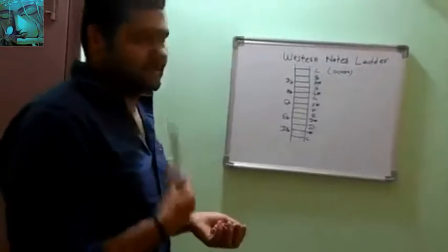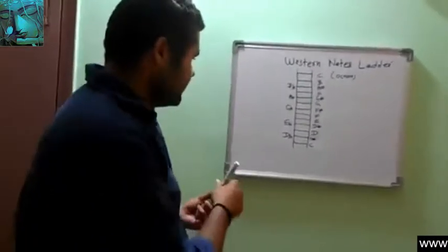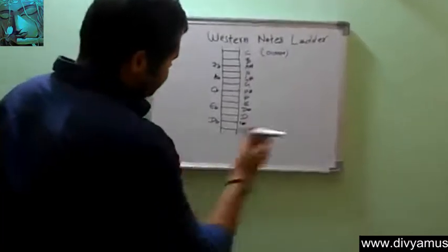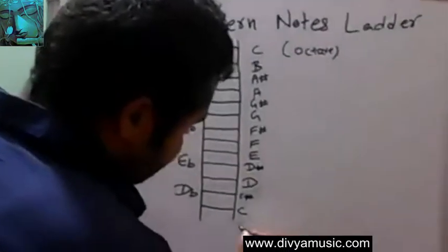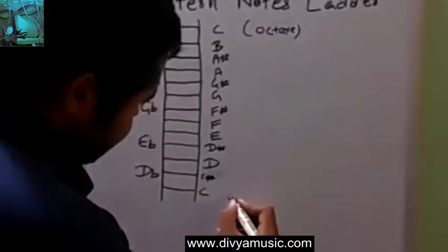Let's discuss the western notes ladder. You can see the first starting note on your keyboard is always C, and this is the first note on the ladder.